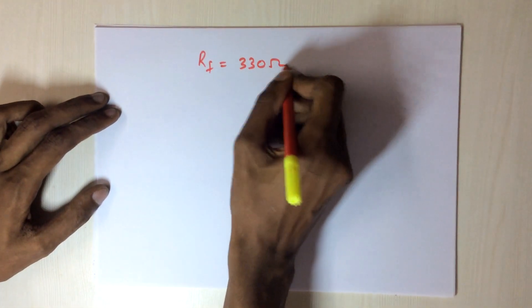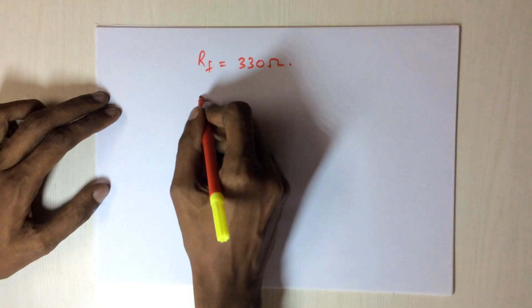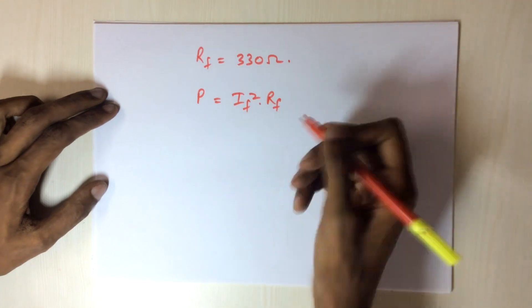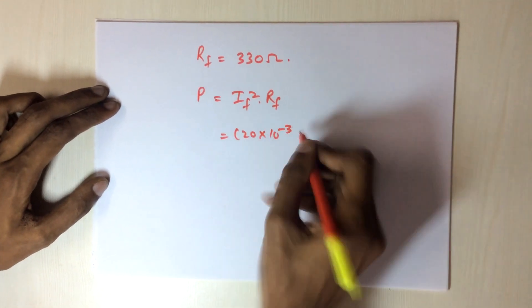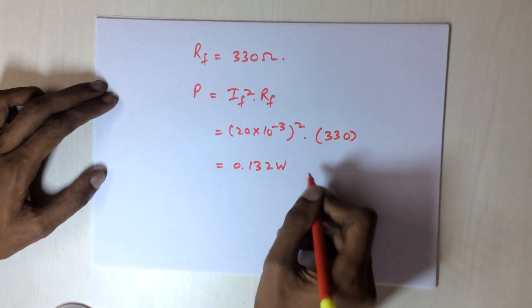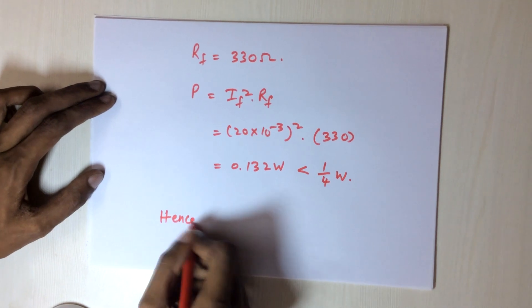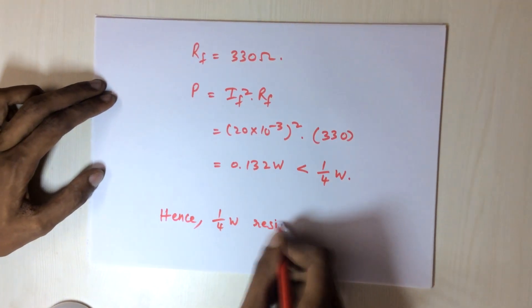The resistance RF is equal to 330 ohms. The power dissipated by the resistor can be calculated by the formula P equal to IF square RF, which is equal to 20 milliampere square into 330 ohms, which leads to 0.132 watts. It is clearly less than 1 by 4 watt, hence a resistor with maximum wattage rating of 1 by 4 watt can be used.